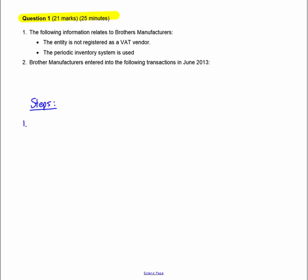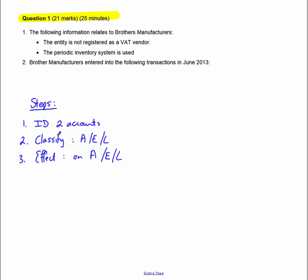The first question you ask yourself is: what are the two accounts affected by this transaction? Identify the two accounts. Remember, accounting is about the double entry system — for every debit you need a credit. Once you've found the two accounts, decide where they fit: are they assets, liabilities, or owner's equity? Put them in the correct columns, then determine the effect of the transaction — are assets going up or down, equity or liabilities going up or down? Then decide which account to debit and which to credit.